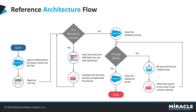Moving on to the reference architecture flow: first, the created bot logs into the dataloader.io portal and exports the issues into a CSV file. The CSV file is then read for each individual ticket. For each issue, the bot extracts the email and the sales order field. These email and sales order fields are passed to the internal web application on-premises, and by using this information, the bot retrieves the product-related information from the web application.